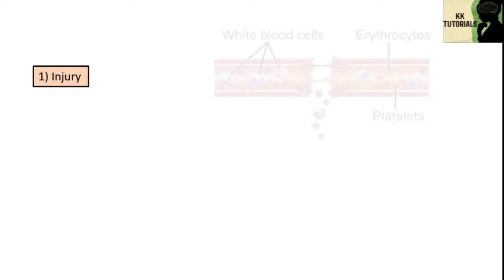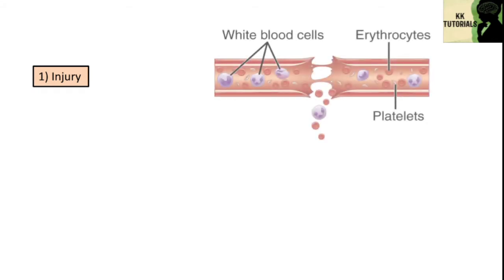The first step is injury. When you get a cut, that is an injury, what happens first is the blood vessel is severed. Blood and blood components like RBCs and WBCs leak out of the break.